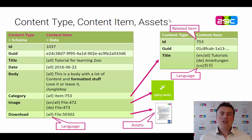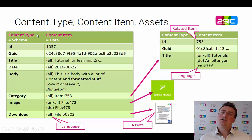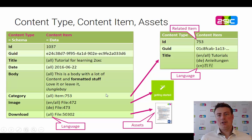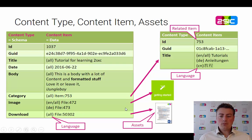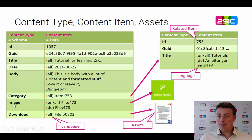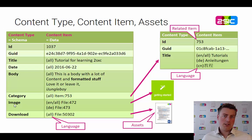If we look at content in general, it's important to understand that we always have a content type. These are the fields that a piece of information can have. The content item is the data of this information, like the ID, the title, the texts, the pictures, etc. It can also refer to other content items and files. The content type is a bit like the schema, or like the columns in a database.